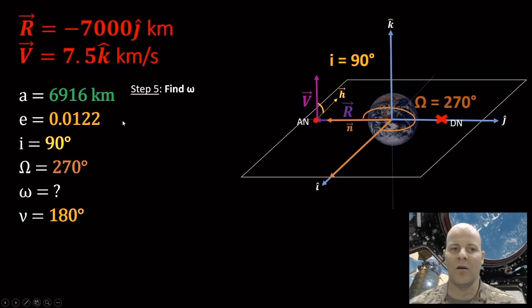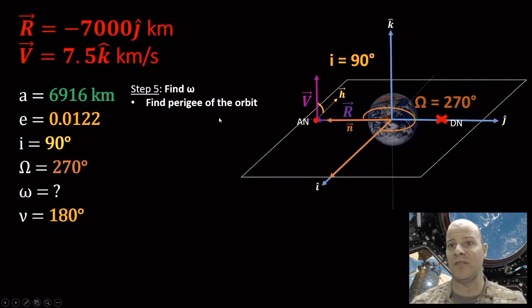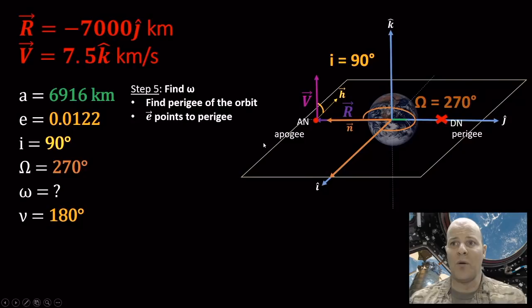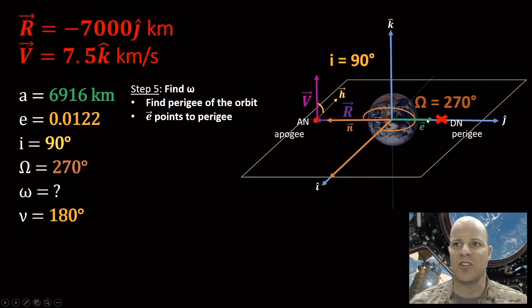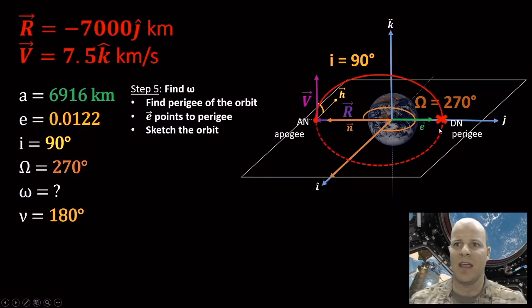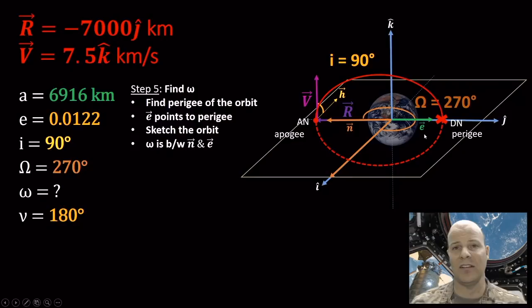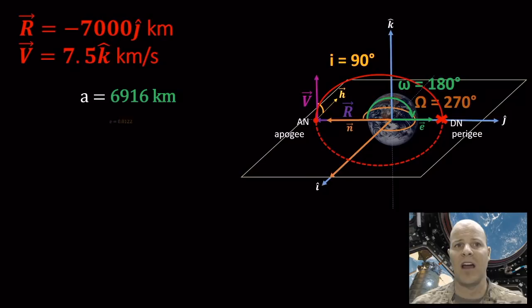One orbital element left: argument of perigee. First I find perigee. We established we're at apogee, so perigee is 180 degrees away — right at the descending node. The eccentricity vector E points to perigee. The argument of perigee is the angle between N and E — as shown on the equation sheet. From our sketch, it's clear that angle is 180 degrees.